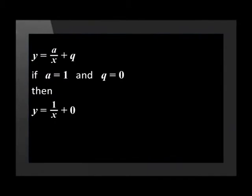That gives us a function y equals 1 over x plus 0. I see where you're going with this. This is going to be our parent graph, which we can then compare to the other graphs of the hyperbola, right? Yes, exactly. And the other graphs will have different values for a and q. Okay, let's see what the graph will look like.